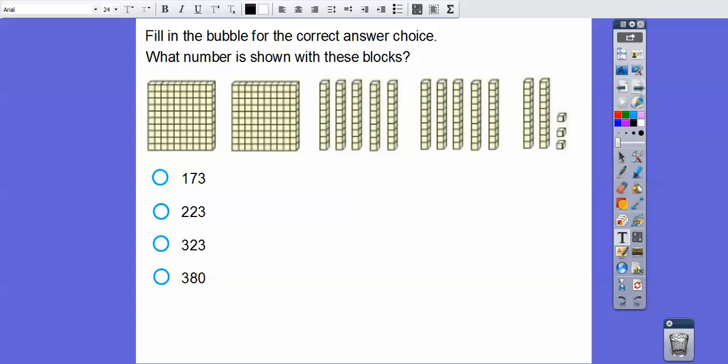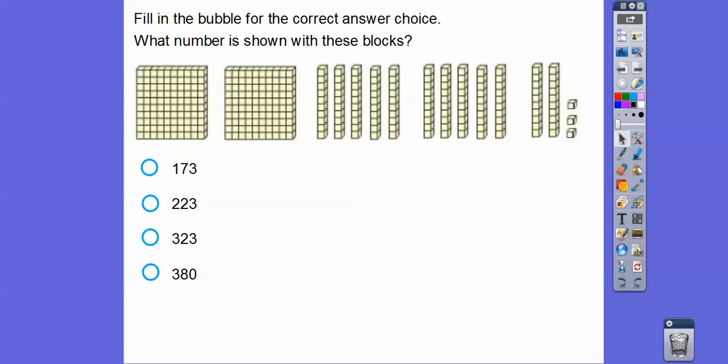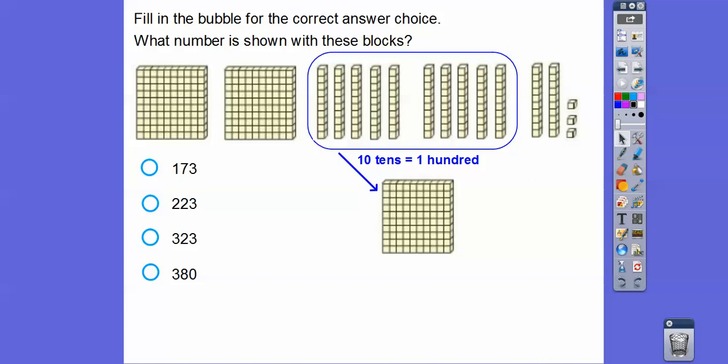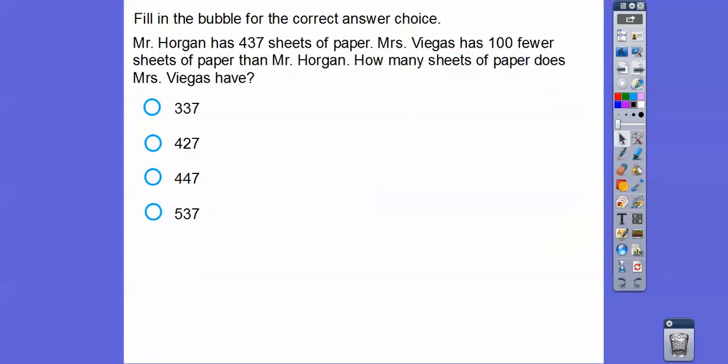Fill in the bubble for the correct answer. What number is shown with these blocks? Here we have two hundreds flats. Here's five, here's five. So these ten flats gives us one more of these guys. So now we have three hundreds blocks, two tens blocks, and three ones blocks. So 323. We just got to remember that ten blocks gives us one more hundreds blocks.